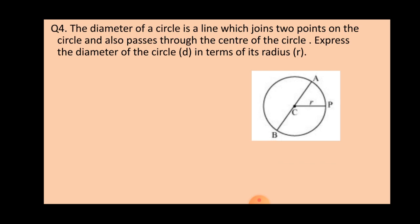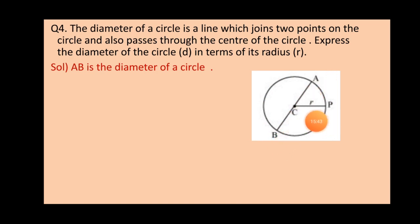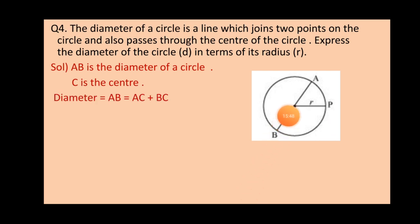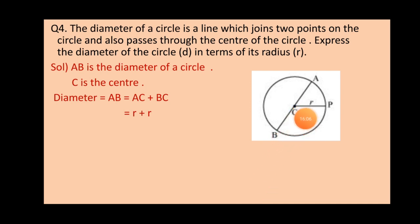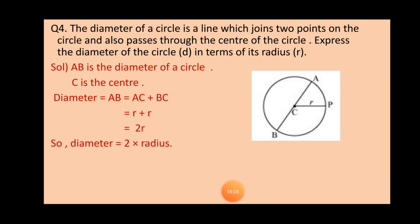Question 4: The diameter of a circle is a line joining two points on the circle and passing through its center. Express the diameter d in terms of radius r. From the figure, AB represents the diameter and the center is C. We can write AB = AC + CB. Since AC and CB each represent the radius r, the diameter d = r + r = 2r.